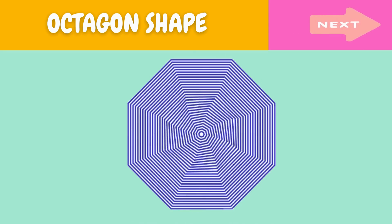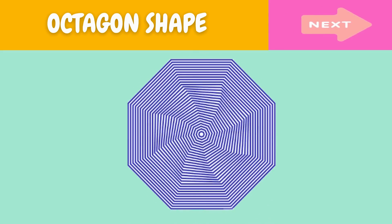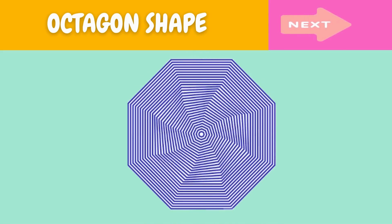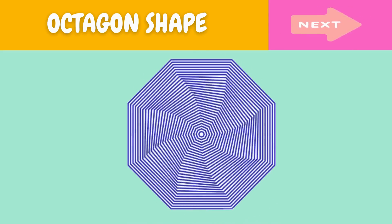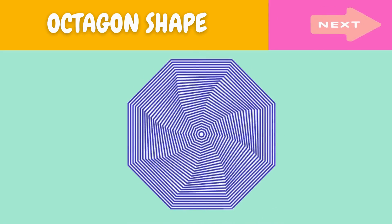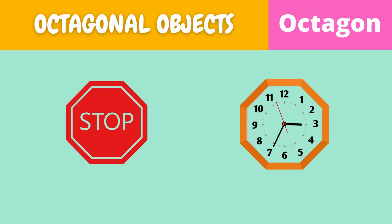This is an octagon. What is this? This is an octagon. Here are some examples of octagonal objects.